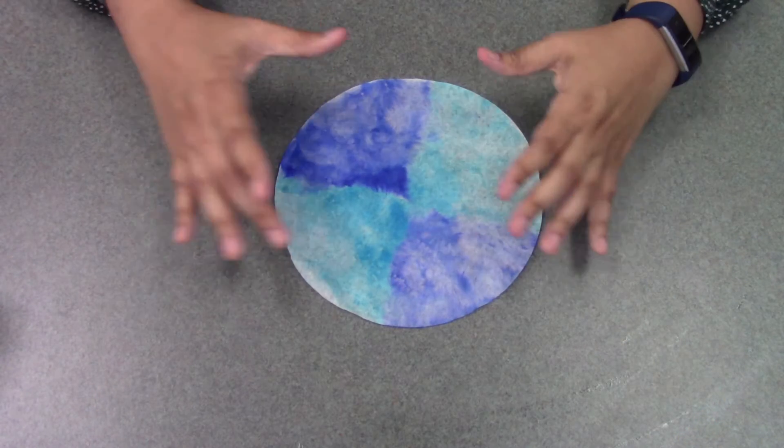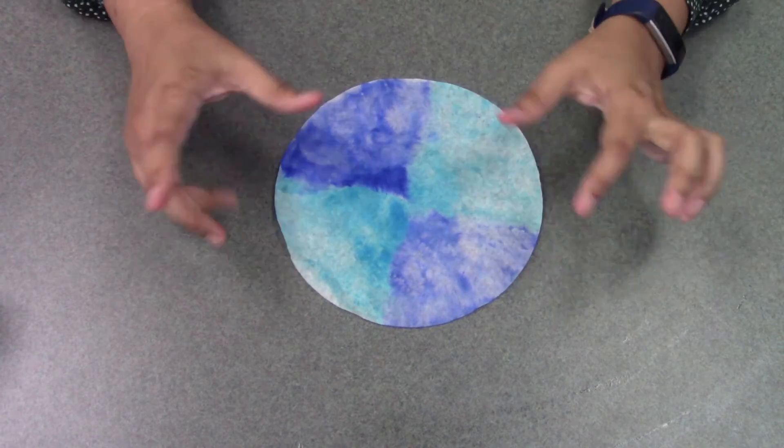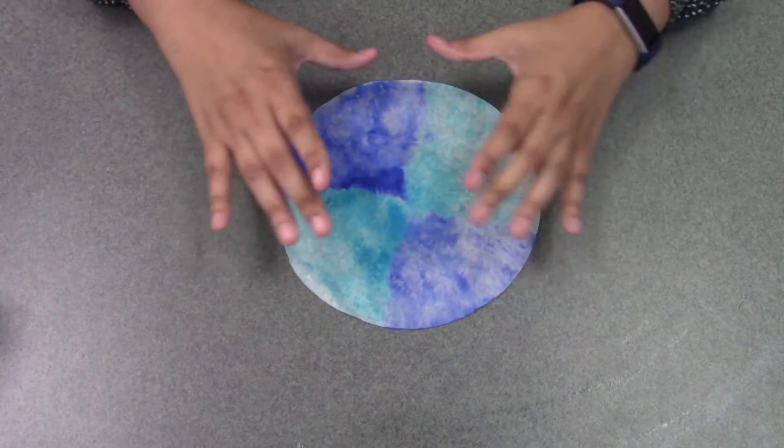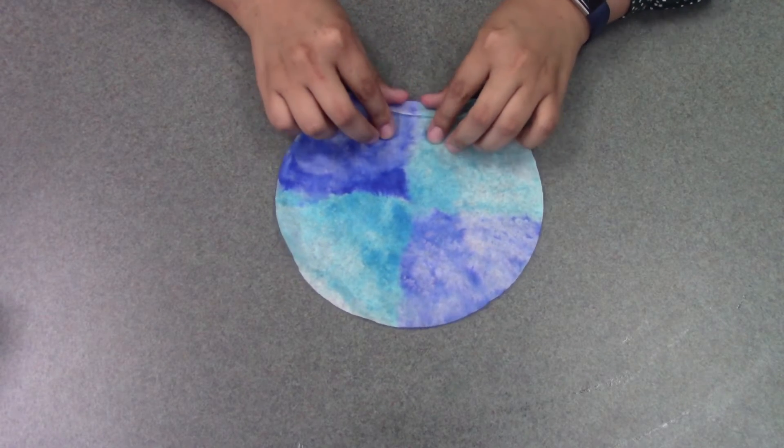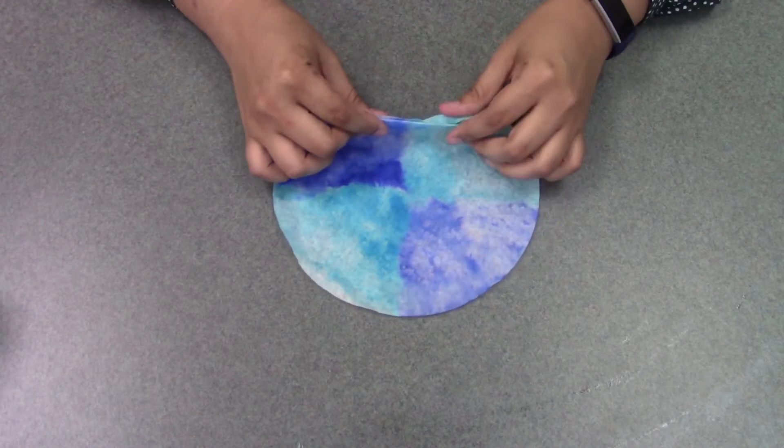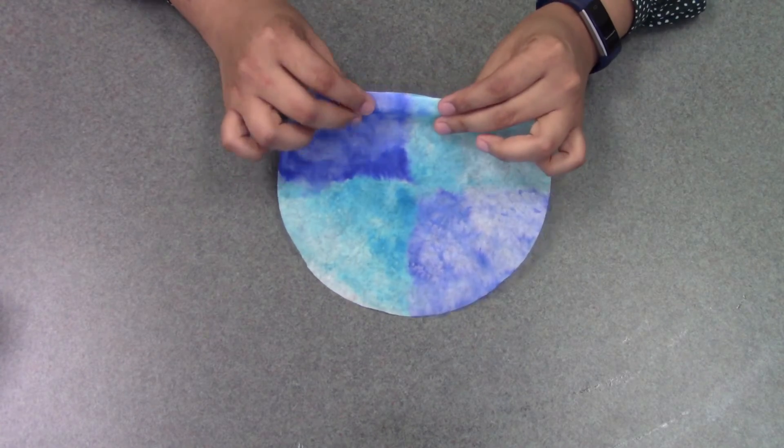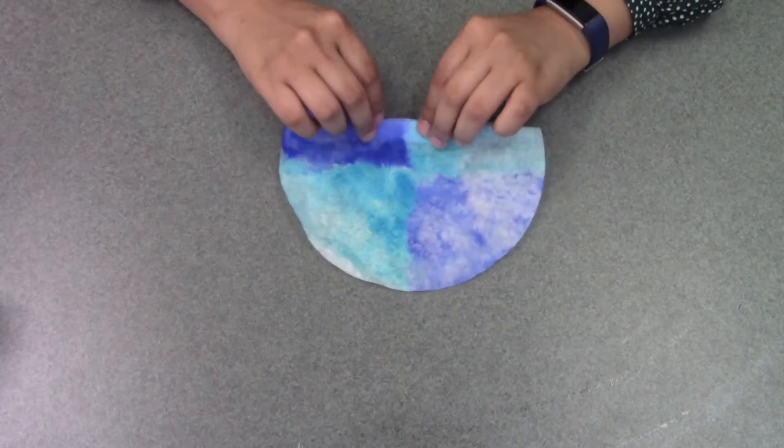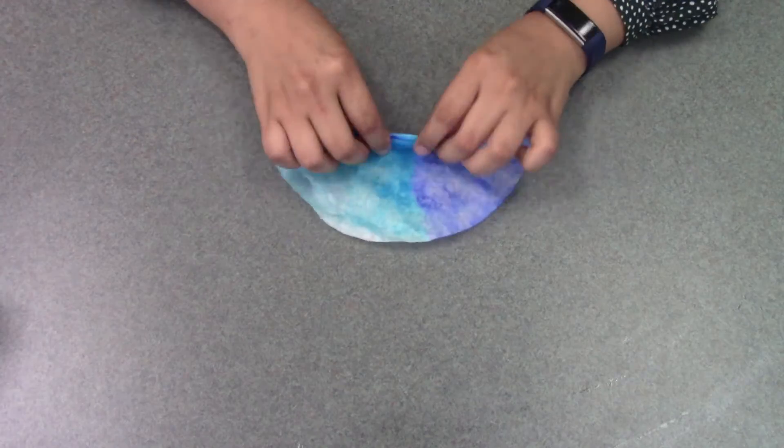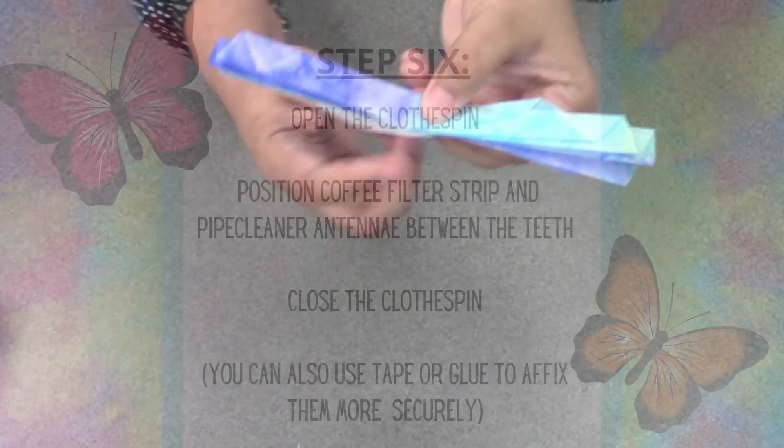So then once your coffee filter is all dry, you're going to either accordion fold or scrunch your coffee filter into a little strip. So you're just going to fold over and then fold it backwards and then fold it backwards the other way and just keep going all the way through. So you should end up with your coffee filter looking something like this.